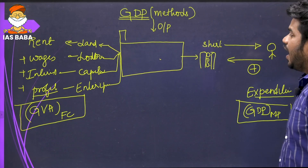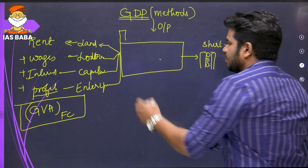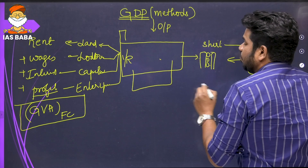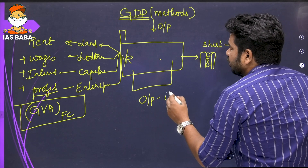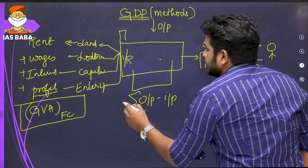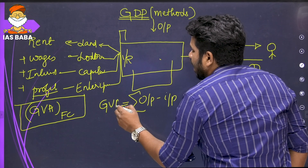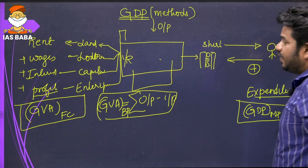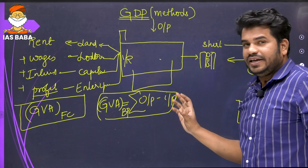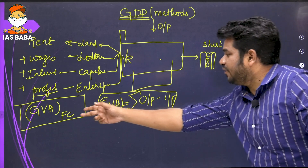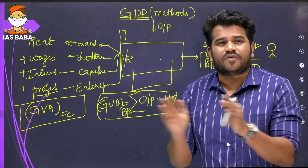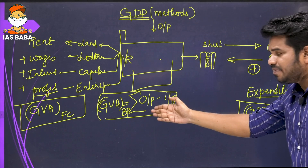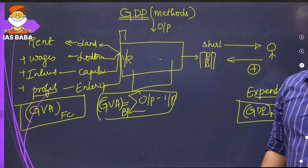Every firm takes inputs — raw materials — adds some value, and gives the output. So by subtracting output minus input, I get something called gross value added at basic price. On paper, if there is no government and no taxes paid, GDP calculated by all three methods should be equal. But since we pay taxes, there is going to be a difference.